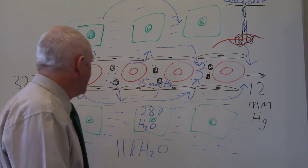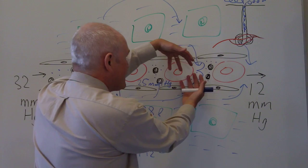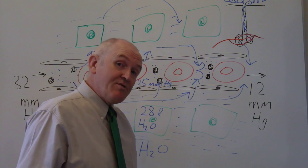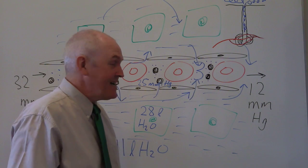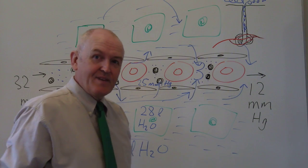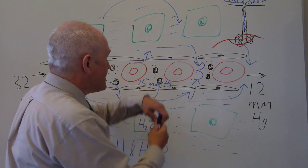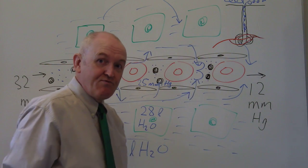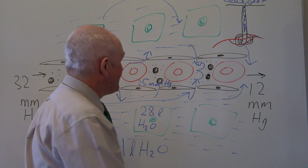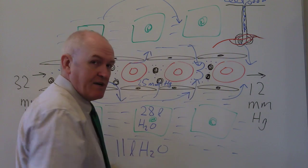Now, as we know, tissue fluid is formed at the arterial end of the capillary and is reabsorbed at the venous end of the capillary as a result of osmotic pressure. But now, after sweating, the amount of osmotic pressure is increased — the blood is now more osmotic. So if the blood is more osmotic, does that mean we're going to get more or less reabsorption of tissue fluids? Well, if the blood is more osmotic, that means we're going to get more reabsorption of tissue fluid.